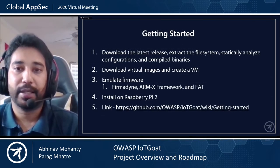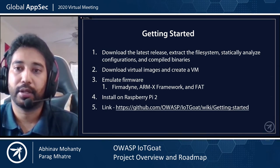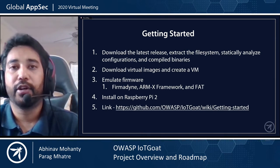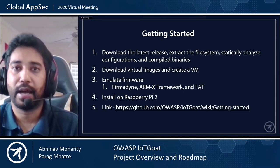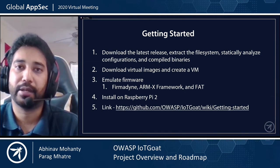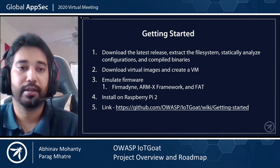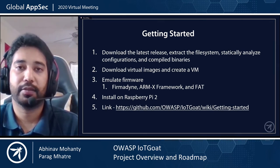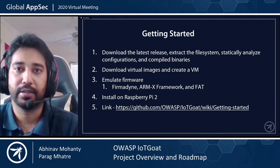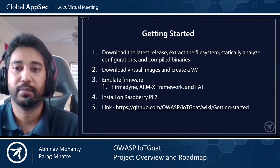There are several methods to get started with hacking IoT Goat, depending on your testing approach. For those looking to extract the file system and analyze configurations and binaries statically, they can download the latest pre-compiled firmware release from the release page on the GitHub repository. For dynamic web testing, the quickest and easiest way is to download the virtual machine disk image, also provided on the GitHub repository, and create a custom virtual machine. I will demonstrate that in a moment.